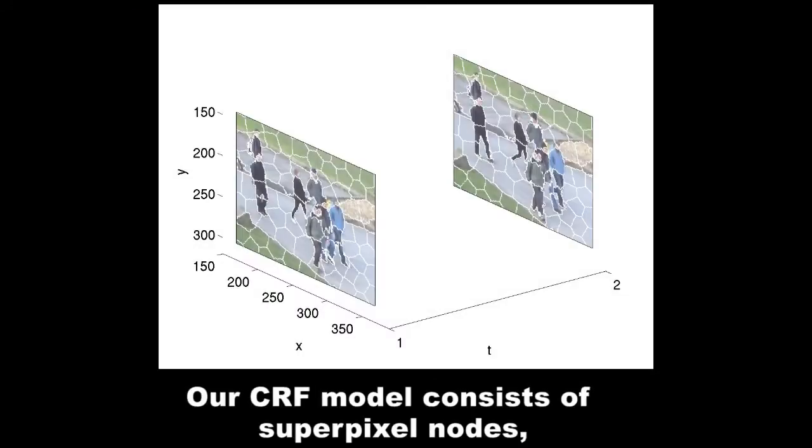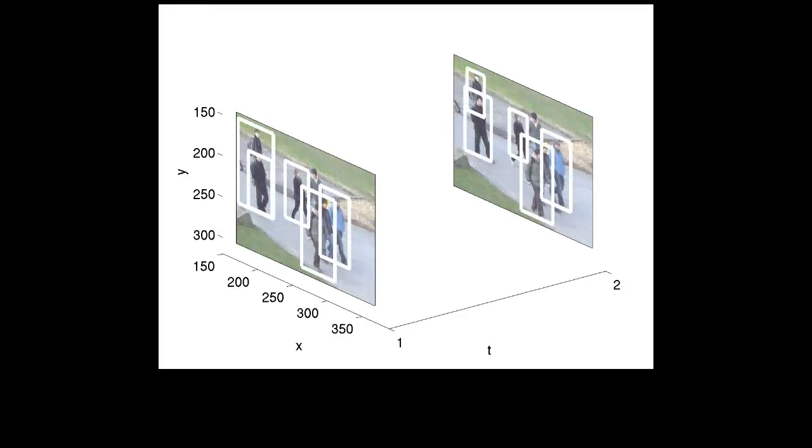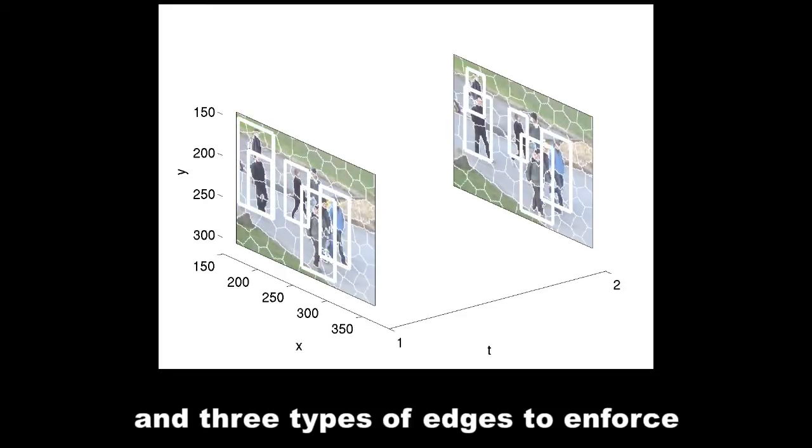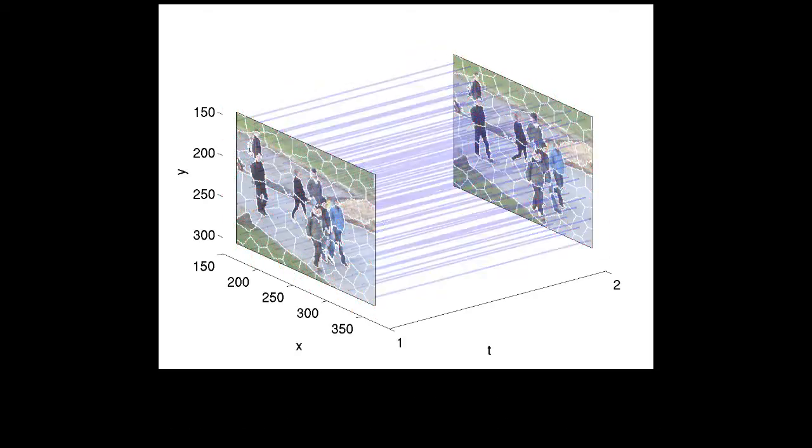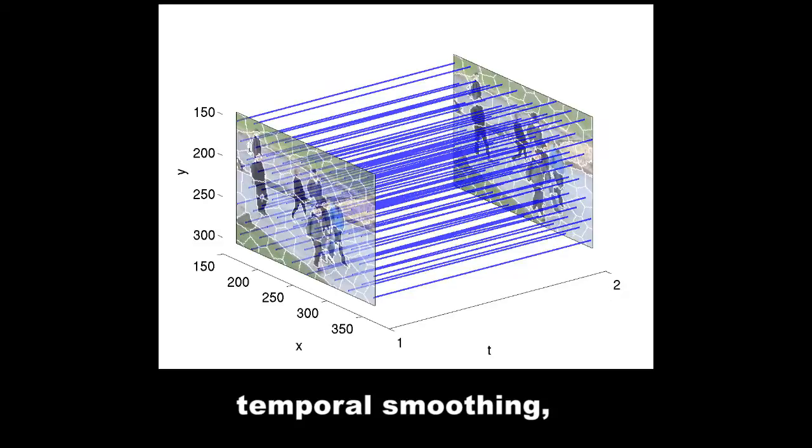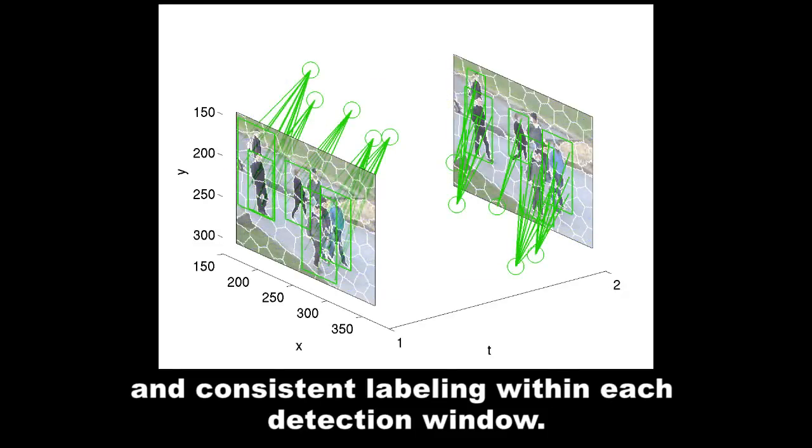Our CRF model consists of superpixel nodes, detection nodes, and three types of edges to enforce spatial smoothing, temporal smoothing, and consistent labeling within each detection window.